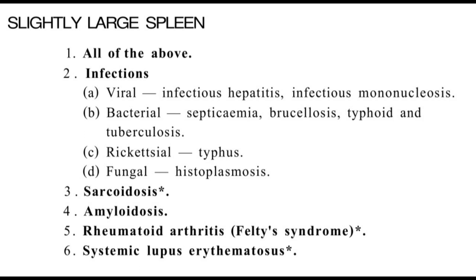You have to look for mild conditions like viral infections including hepatitis and infectious mononucleosis. In bacterial infections: septicemia, brucellosis, and typhoid also account for the slightly enlarged spleen. Tuberculosis will also present with a slightly enlarged spleen. In rickettsial and fungal infections like histoplasmosis, the spleen will also be within the range of 13 to 15 cm.